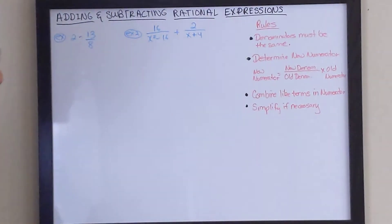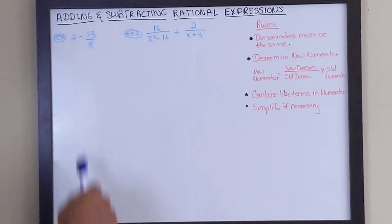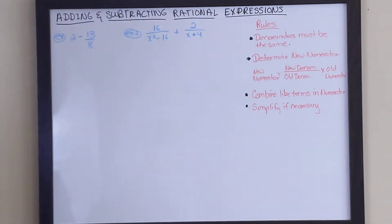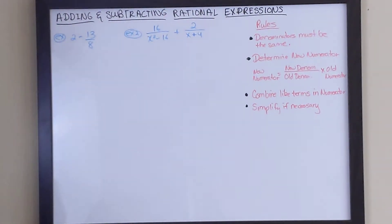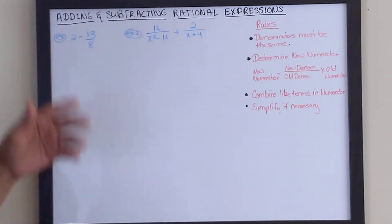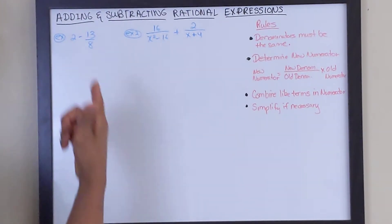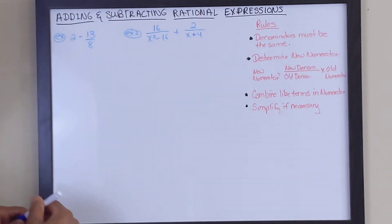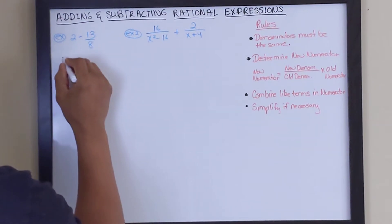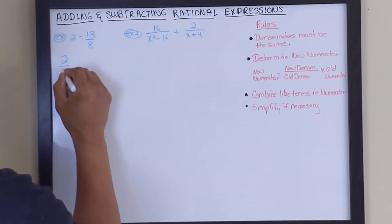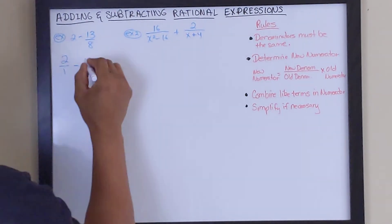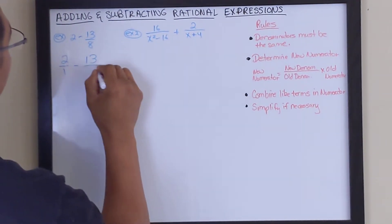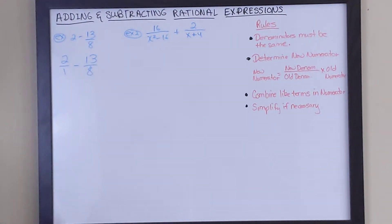Let's go through some examples to show you how that's done. For this first example, we're going to use just regular fractions so you can understand the concept. We have 2 minus 13 over 8. We have a whole number subtracted by a fraction. The rule is, anytime we have a whole number, we make it into a fraction by putting a 1 under it. So now we've made 2 into 2 over 1, minus 13 over 8.